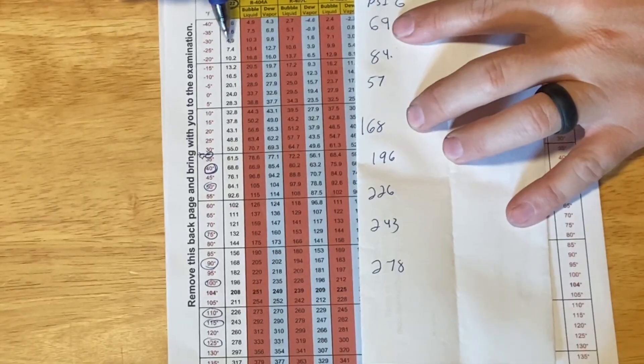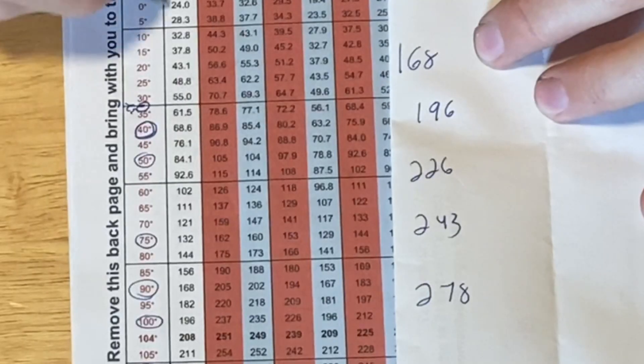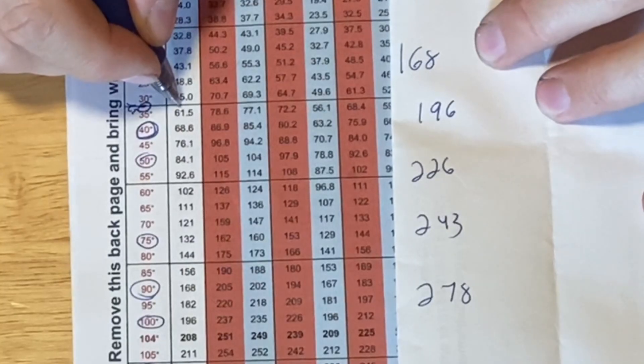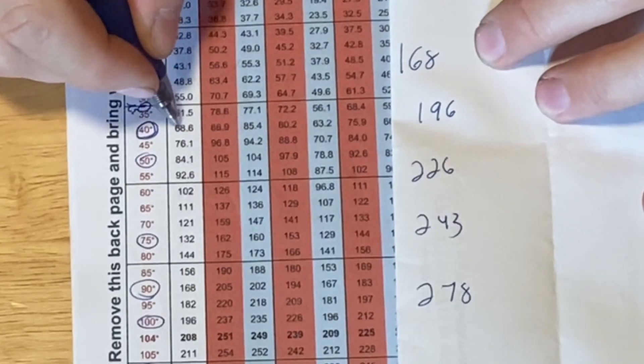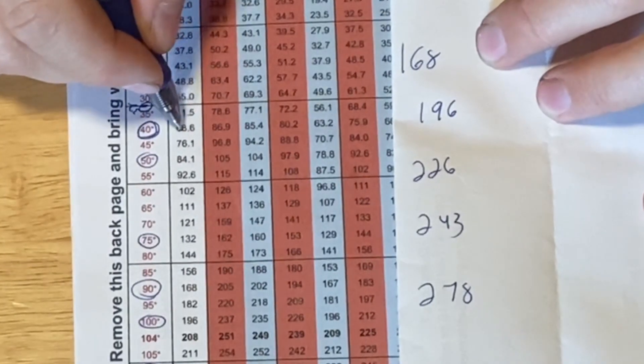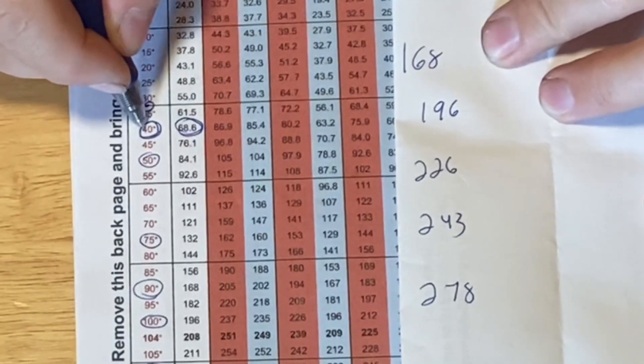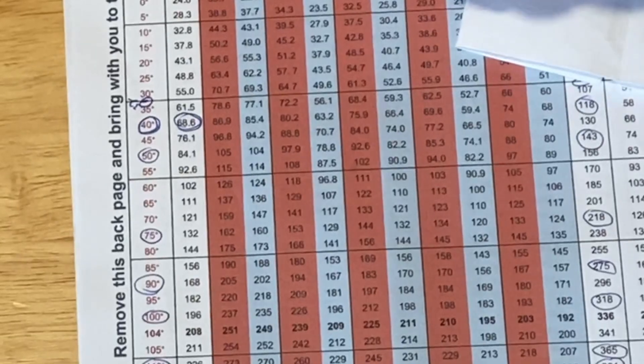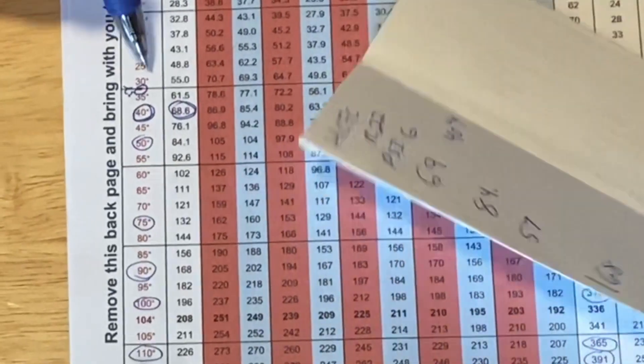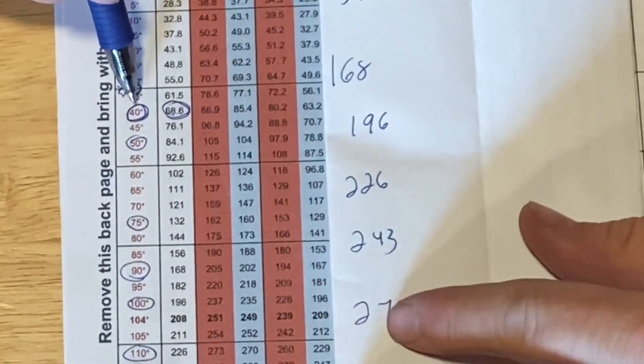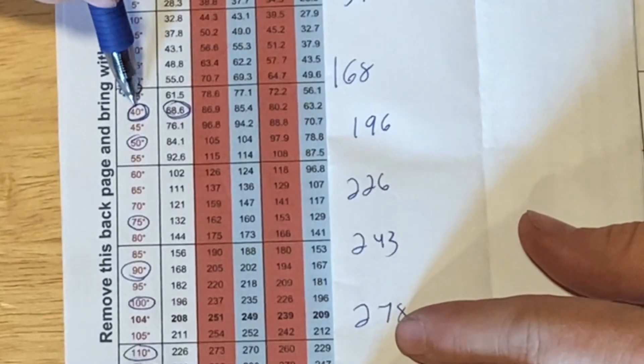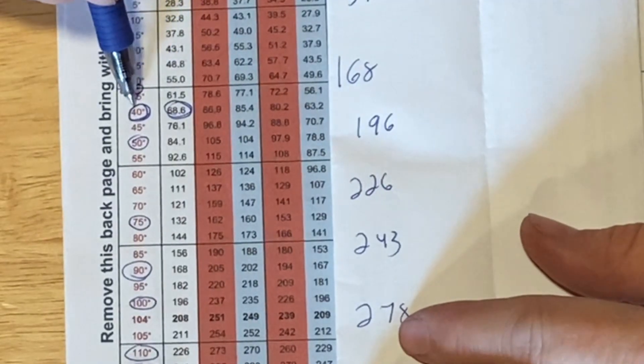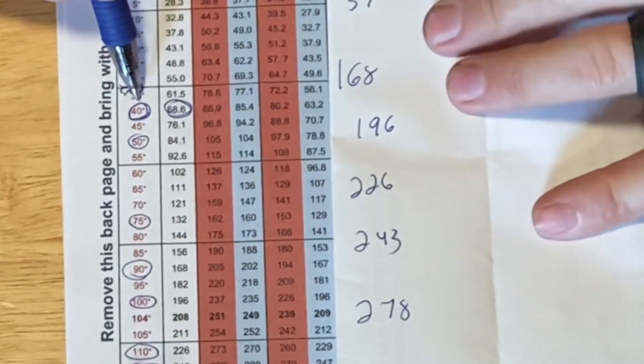All right here we go. So we're gonna start off with 69. So I'm gonna find over here R22. At 69 we're kind of right between these two numbers here. We get 68.6. That's pretty close. This is gonna be our pressure. And notice that converts to a saturated temperature of 40 degrees Fahrenheit. Notice before we already used 40. For 410A we had a different pressure but it also equaled 40.